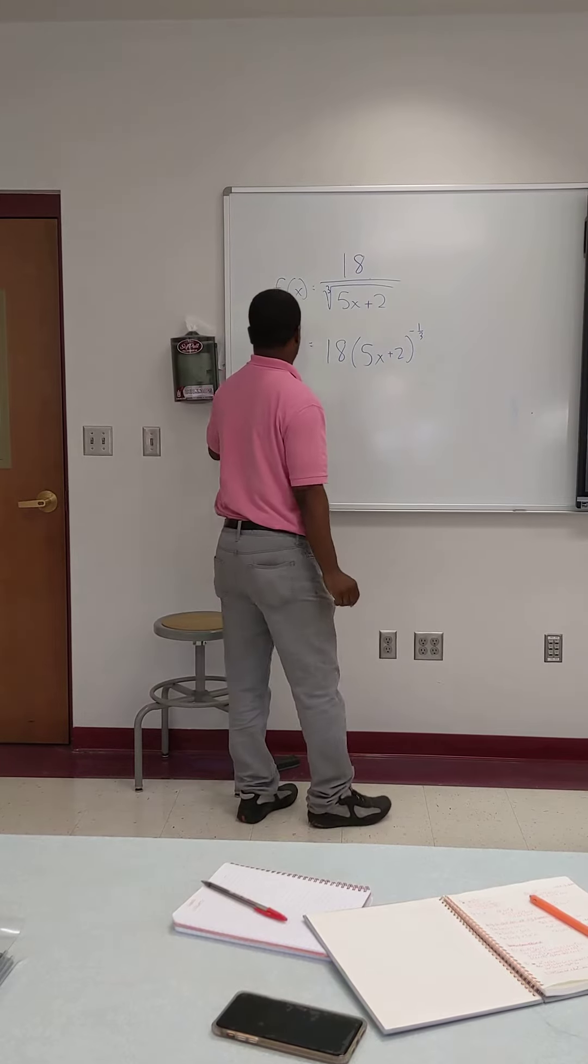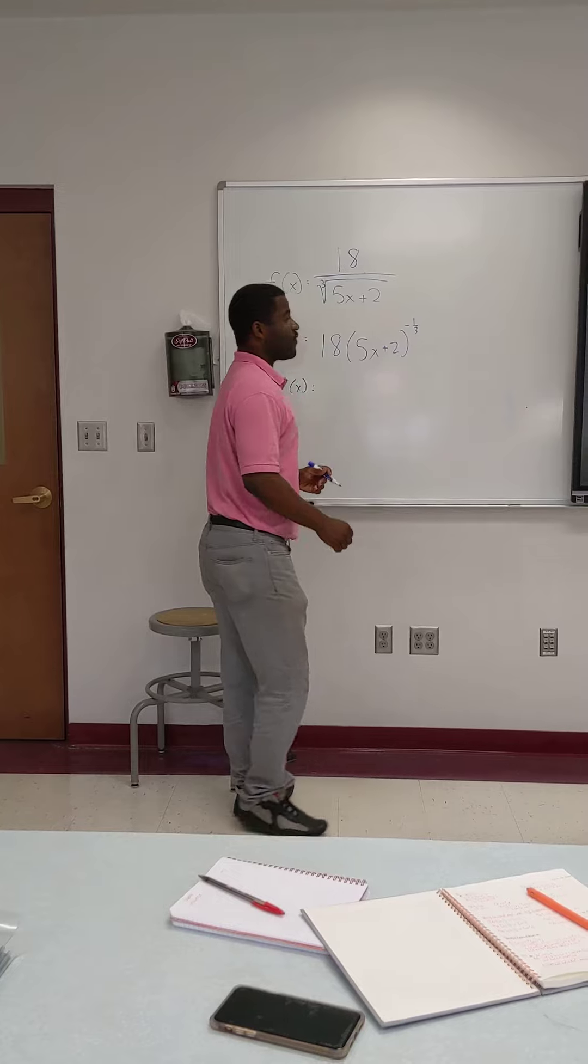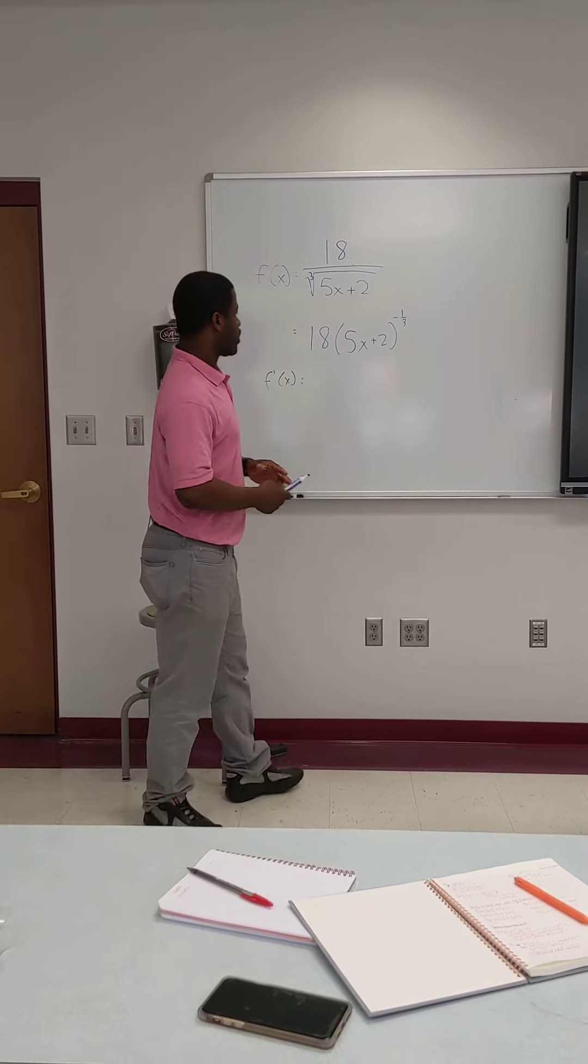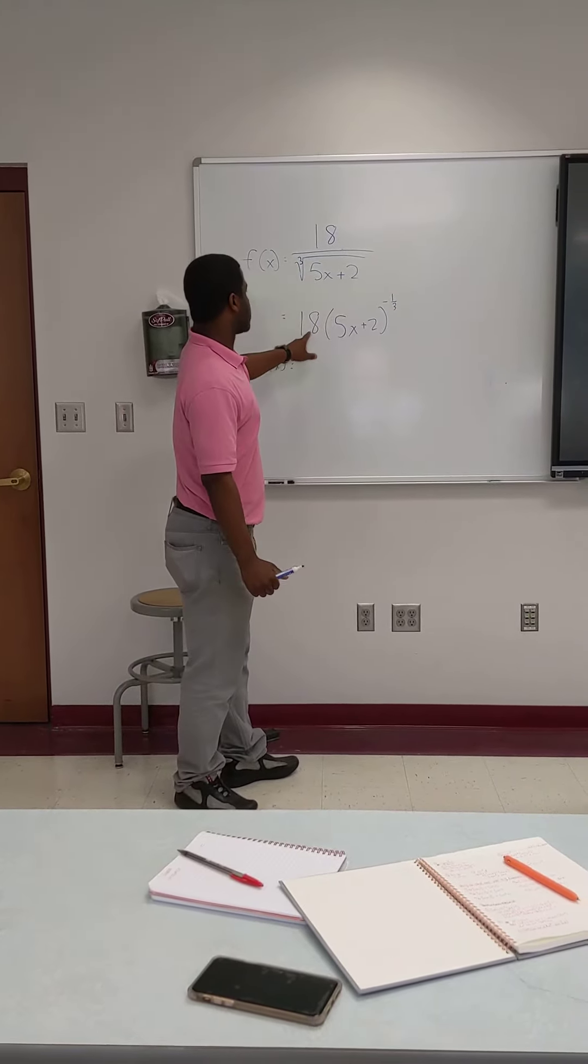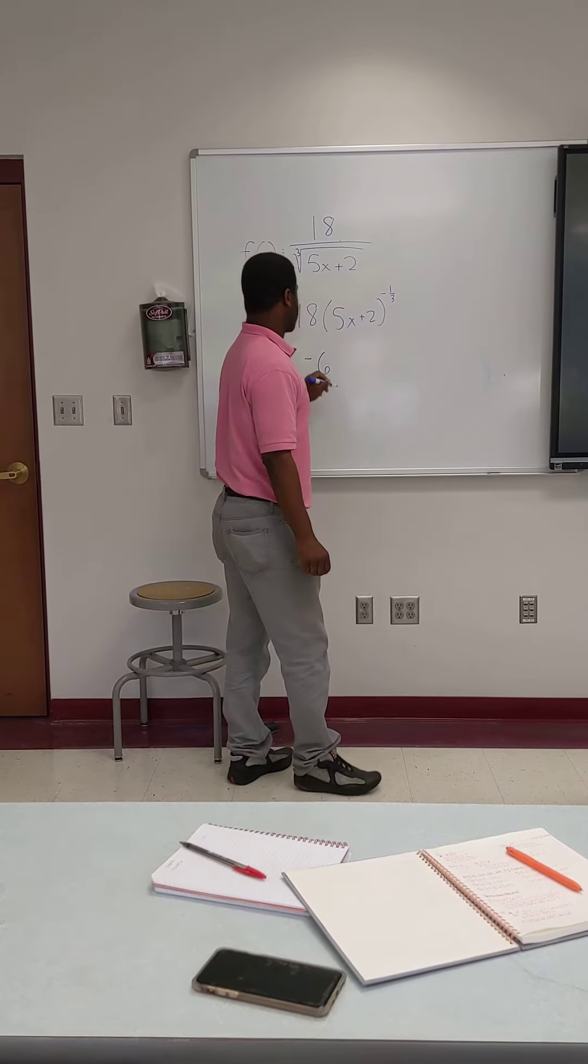Now, as I find the derivative, I'm going to use my regular rules. Negative 1/3 times 18 would give us negative 6.